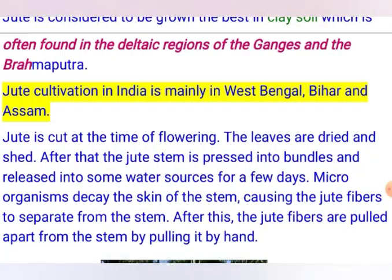How do we get jute from the jute plant? Jute is cut at the time of flowering, because flowering indicates the plant has reached its full growth. The plant is cut near the ground, bundles are made and dried — the leaves shed — then the bundles of jute stems are submerged in water sources like a pond. Microorganisms develop in the stem and cause natural decay of the stem's skin, which loosens and separates the jute fiber from the stem. This process is how jute fiber is separated.